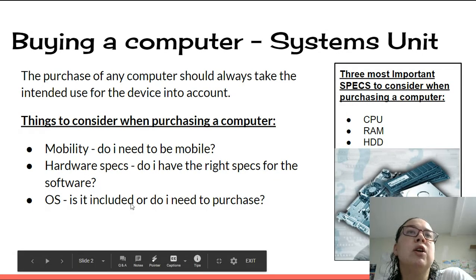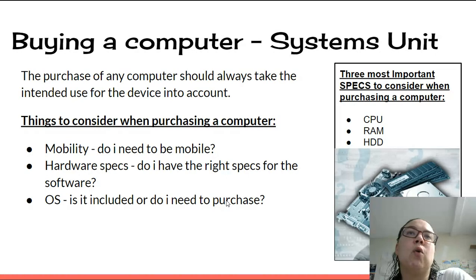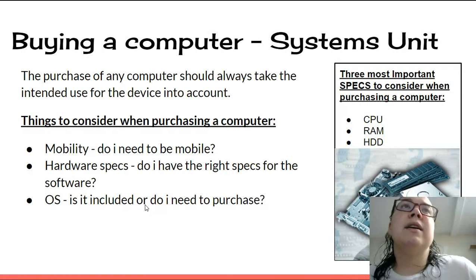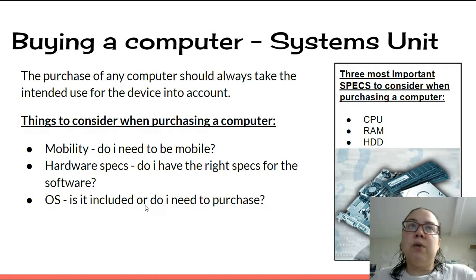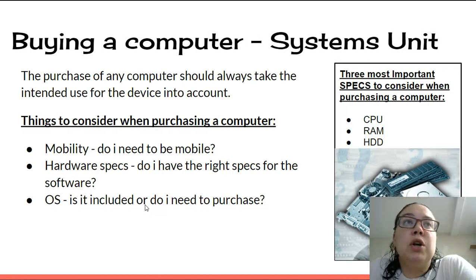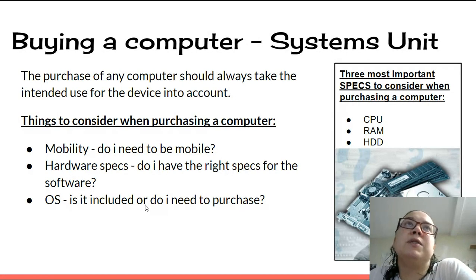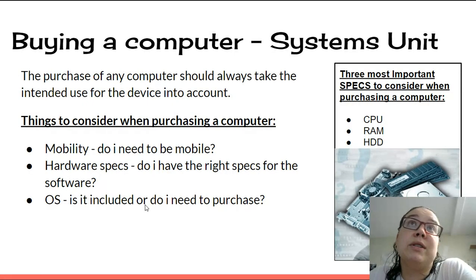Operating system: is it included or do I need to purchase it separately? Windows is not always included with the purchase. Every time you buy a Mac, you will always get the Mac operating system included. But with Windows, some places sell it without, because people might want to download a free open-source operating system like Linux, so they don't need to spend about two to two-and-a-half thousand on buying Windows 10.